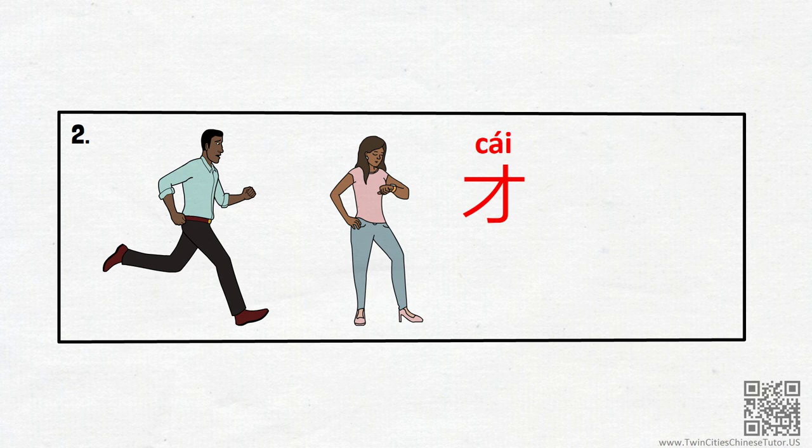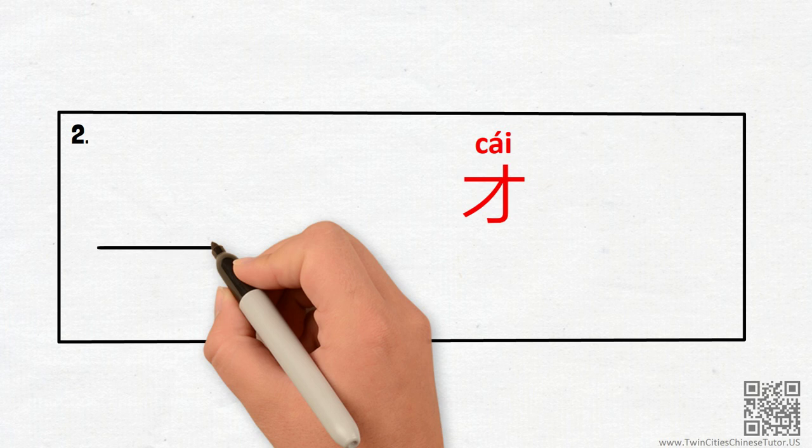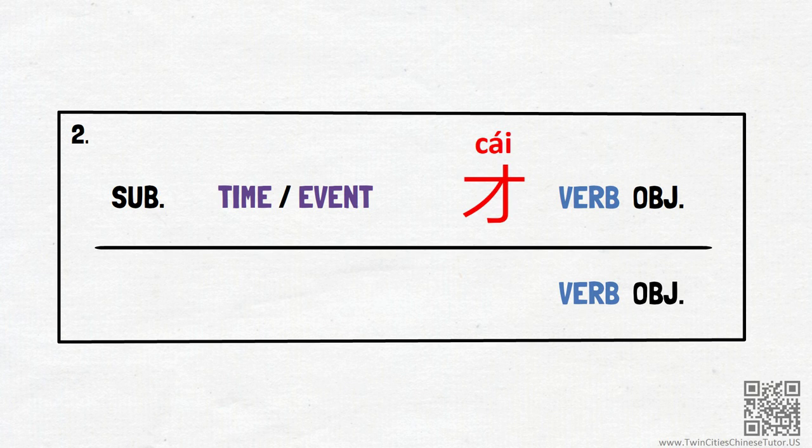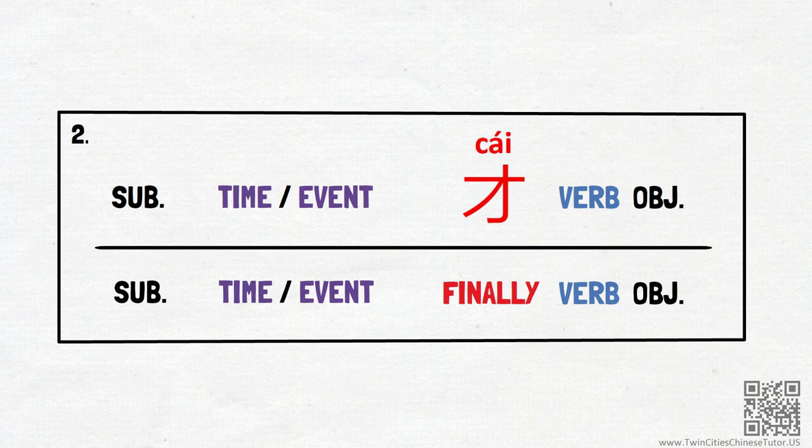Second, expanding on the overturning of the previous expectation, the adverb 才 is also often used to convey a feeling of later than expected or more difficult than expected. In contrast to the first usage, you'll notice that a time or event is mentioned before 才 in this case. The pattern goes: subject, time or event, 才, verb, object. To convey similar feelings, 才 can be translated into English as 'finally' or 'not until.'